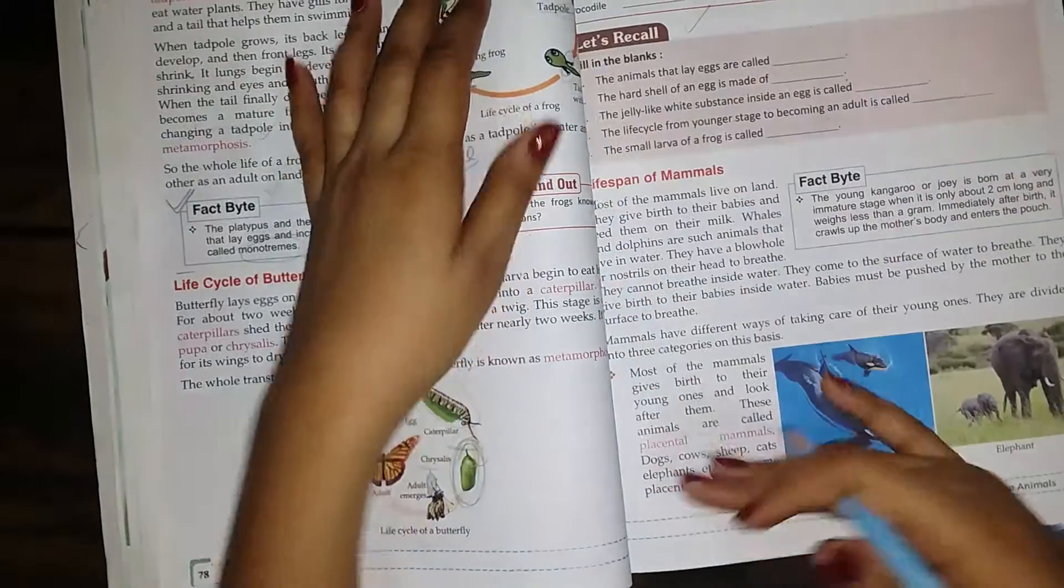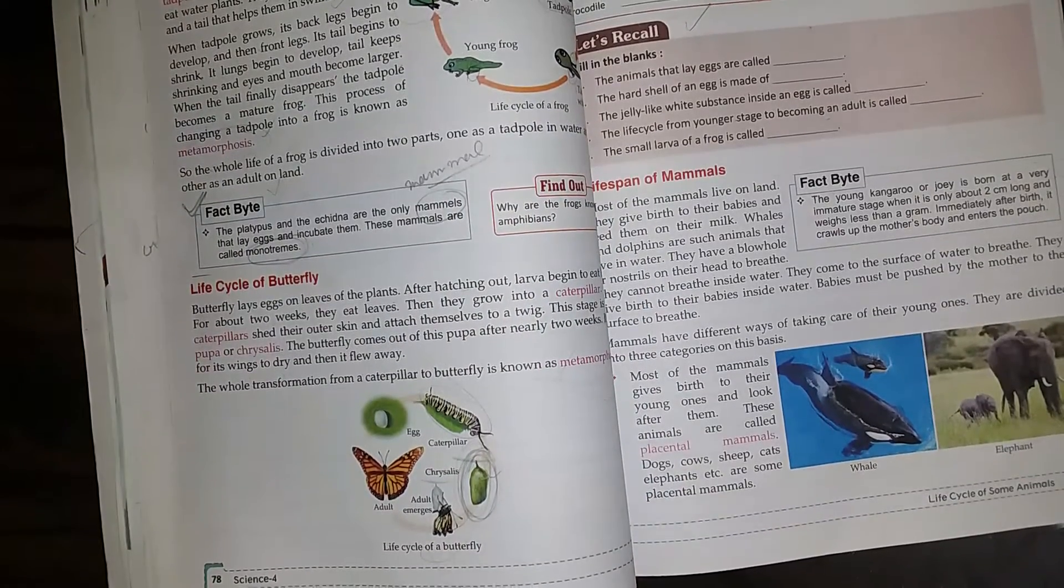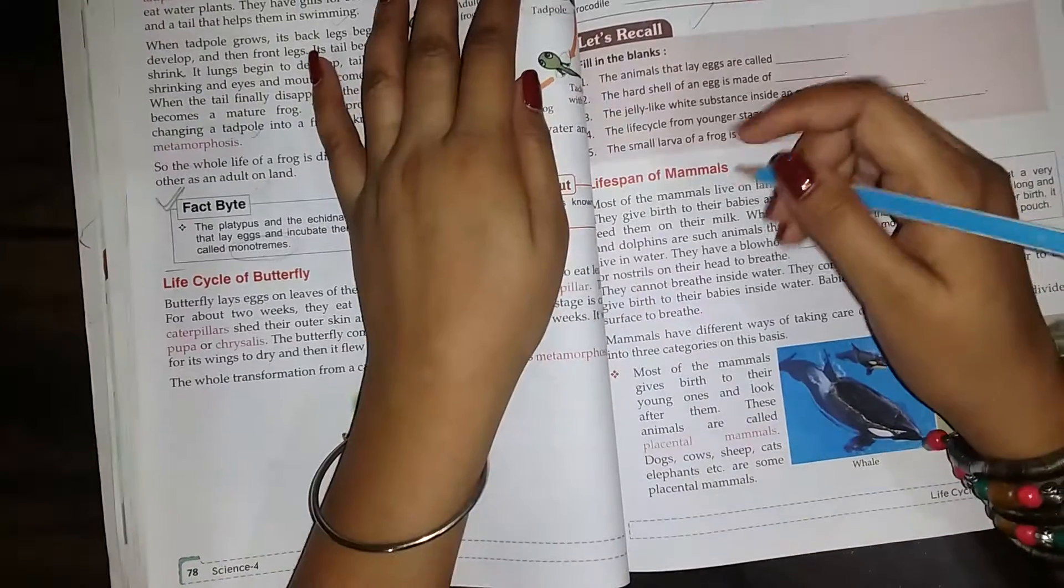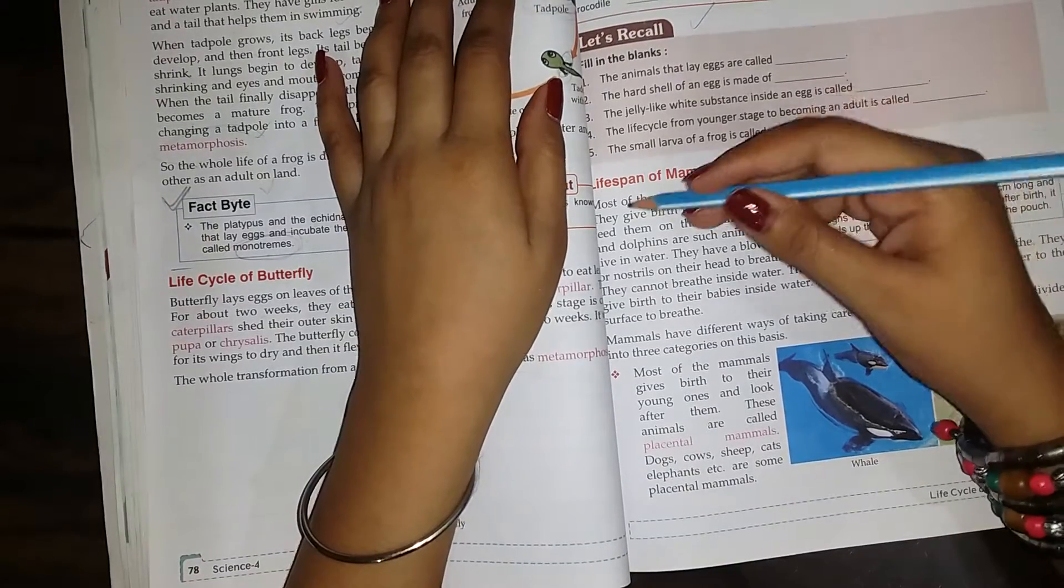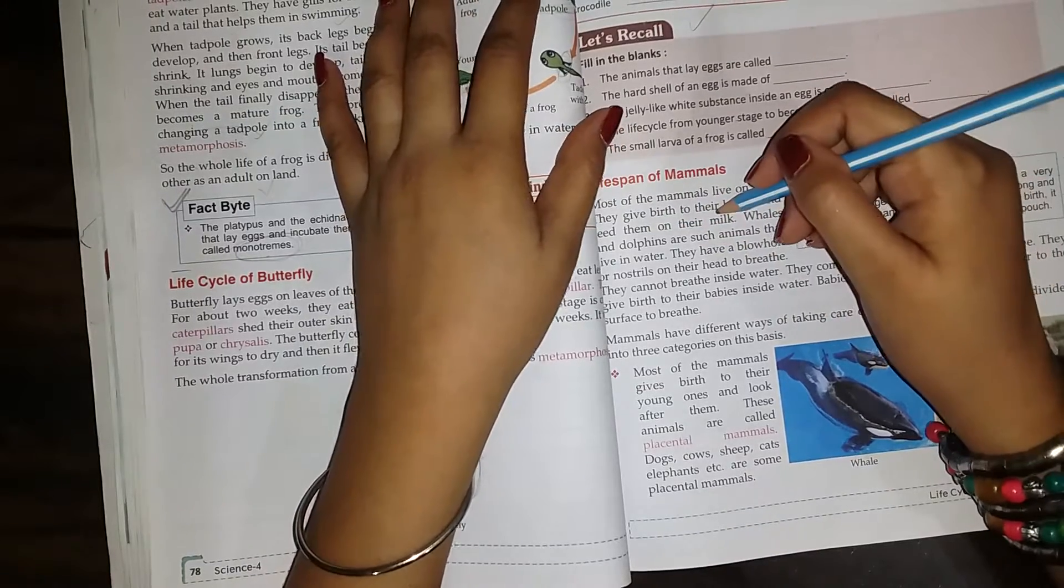Now let's talk about life span of mammals. Mammals produce babies. Most of the mammals live on land. They give birth to their babies and feed them.